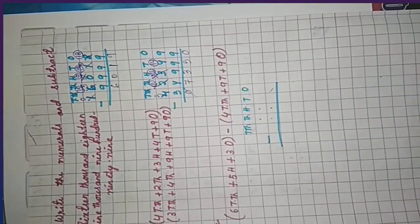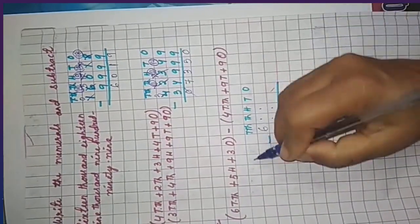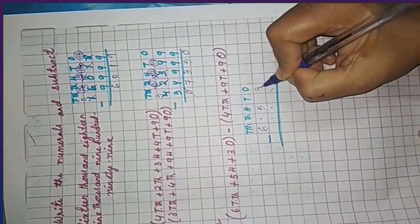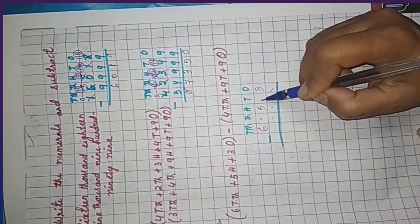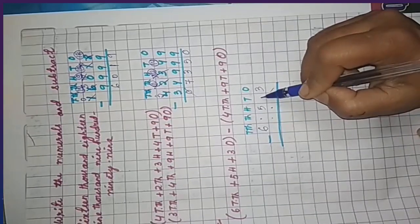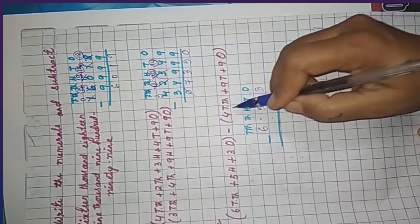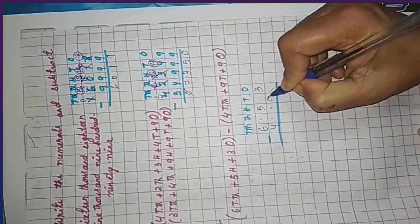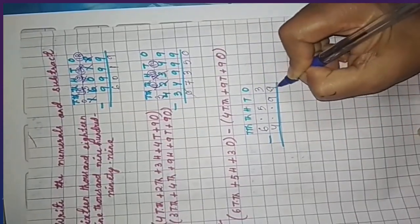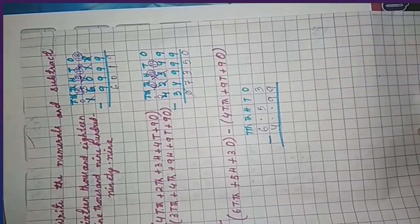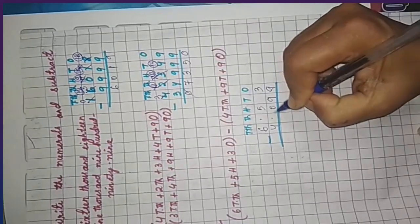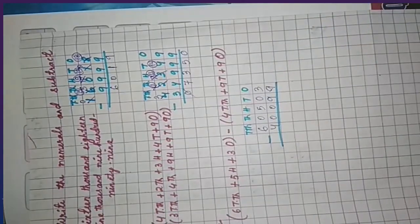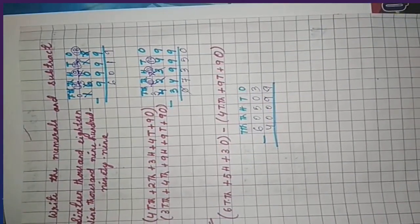For the remaining questions, same process: if the number is sixteen thousand with no hundreds, write five in the hundreds place and zero in the remaining places. For four ten-thousands with nine tens and nine ones, write nine in the tens place, nine in the ones place, and zero in all leftover places. Then do the subtraction. Hope you all have understood, children.